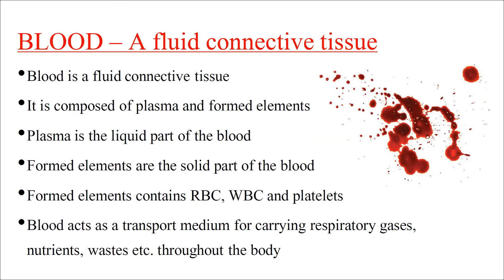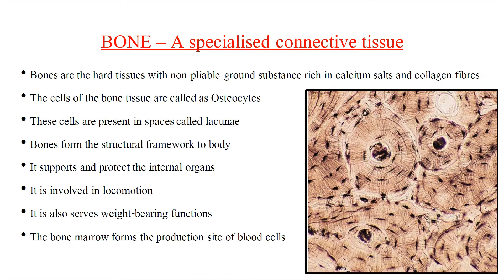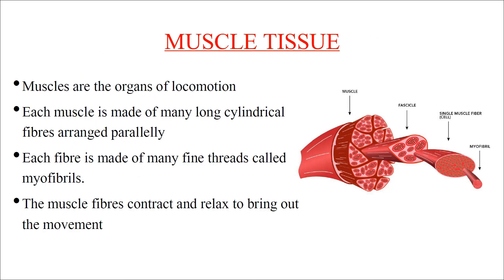Blood is a fluid connective tissue composed of plasma and formed elements. The formed elements are cells: RBCs, WBCs, and platelets. Plasma is the liquid part and formed elements are the solid part of blood. Blood acts as a transport medium for carrying respiratory gases, nutrients, and waste throughout the body.